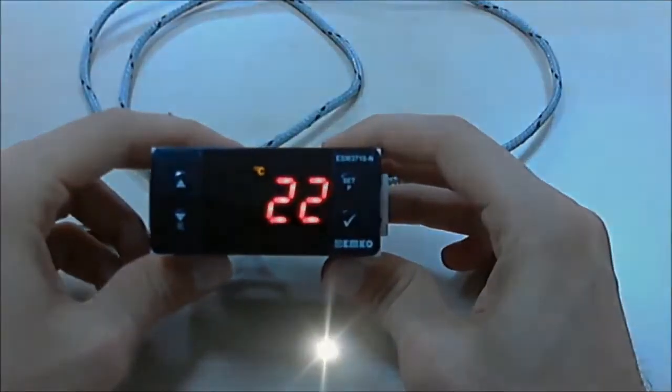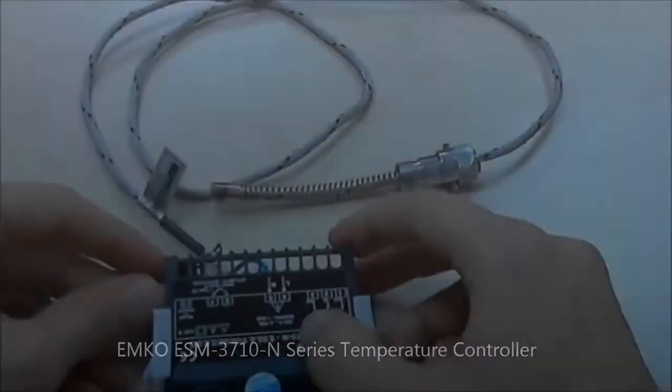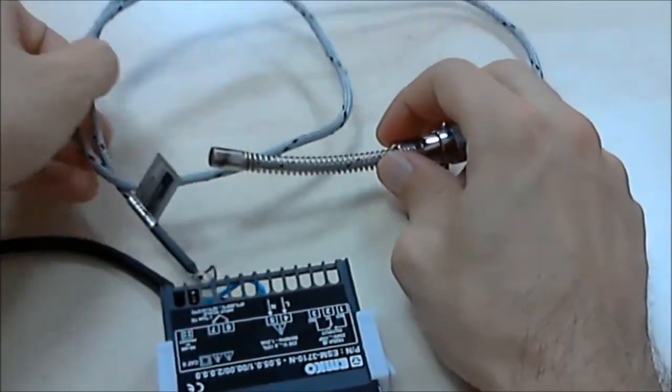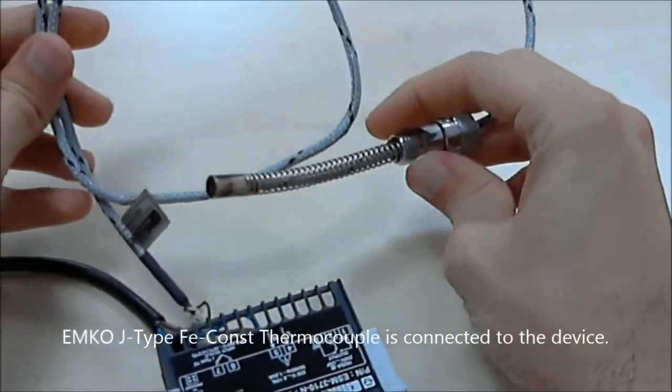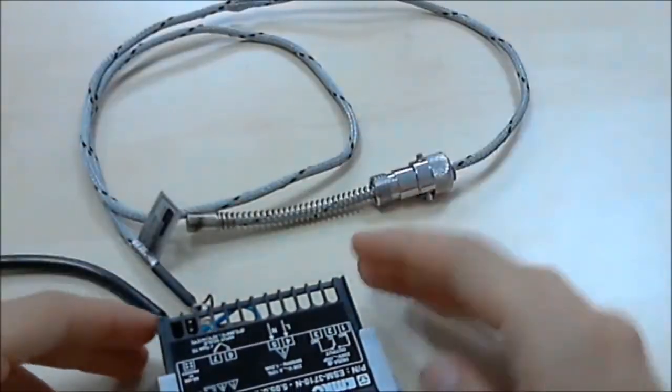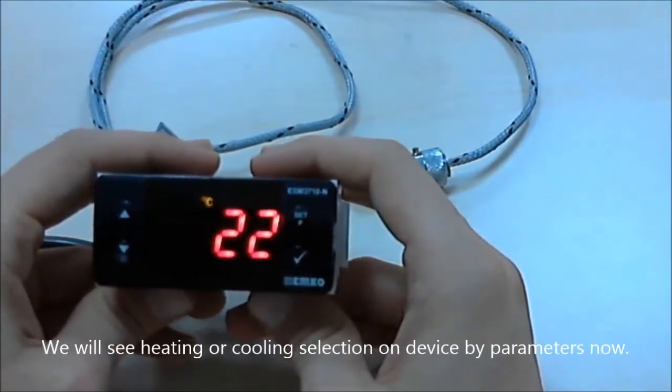This is EMCO ECM3710 N-Series Temperature Controller and we also connected a G-Type Thermocouple. Now we will see how we can select heating or cooling.